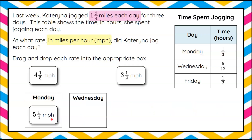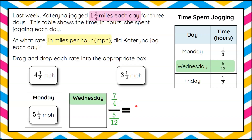Let's clear our board and talk about Wednesday. On Wednesday it took her five-twelfths of an hour to jog one and three-fourths miles. We write our complex fraction: one and three-fourths miles over five-twelfths of an hour. We rewrite as division — seven-fourths divided by five-twelfths — and use our division rule for fractions, multiplying by the reciprocal: seven-fourths times twelve-fifths.